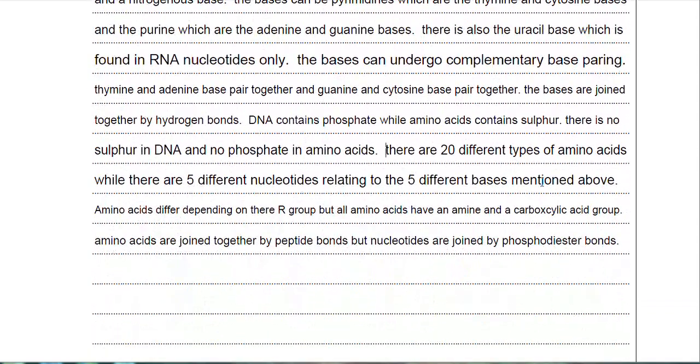I've then mentioned about the amino acids differ depending on their R group, but all amino acids have an amine and a carboxylic acid group. And lastly, amino acids joined together by peptide bonds, but nucleotides are joined by phosphodiester bonds. So the vast majority of that essay was really to do with the differences between nucleotides and amino acids. There are only a couple of similarities between amino acids and nucleotides.